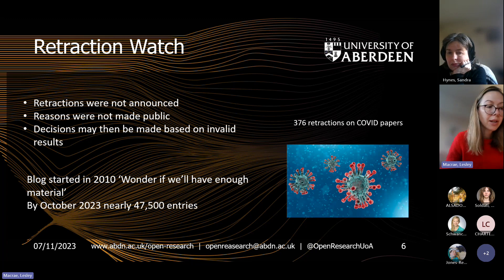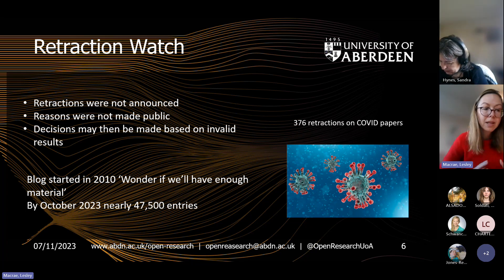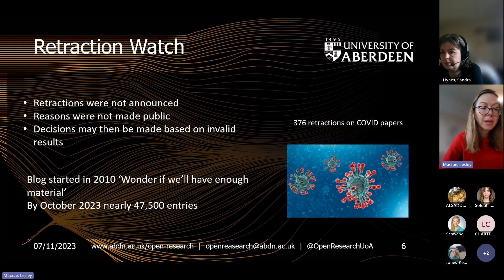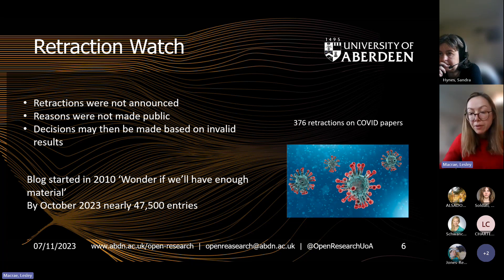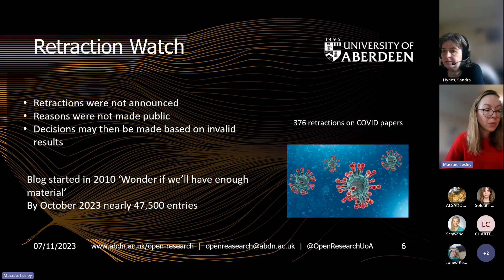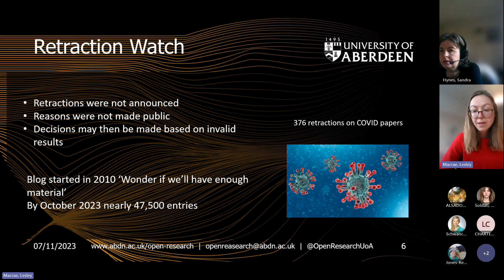Retraction Watch is a website, blog and movement started by two US academics, Adam Marcus and Ivan Oransky, in 2010 to report on the retractions of scientific papers. They developed an interest after noticing a rising level of retractions. It's not entirely clear why retractions have risen over the last five to ten years — it might be that more papers are being published, or that we now have better tools for detecting things like plagiarism. They say that about two thirds of retractions are for misconduct and about a third for things like mistakes in samples or statistics.